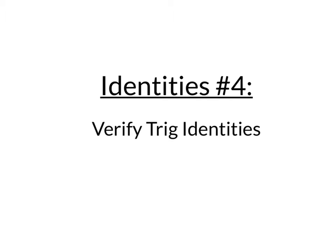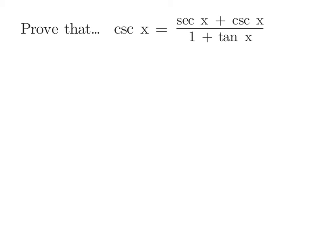Alright, let's verify some more trig identities. We want to prove that cosecant is equal to secant of x plus cosecant of x over 1 plus tangent of x. Our plan is to start with the ugly side and turn it into the pretty side. So the ugly side is obviously the fraction, and we have to write it down exactly the way it looks without doing anything to it.